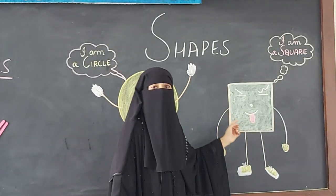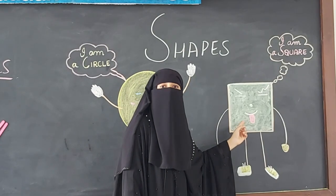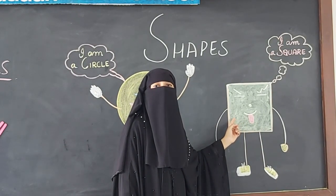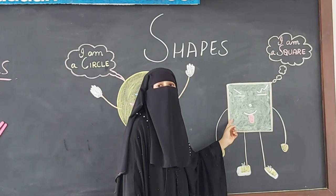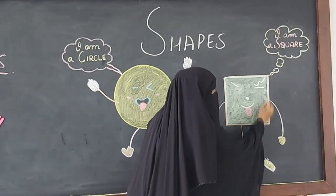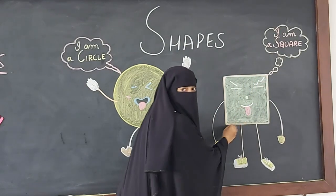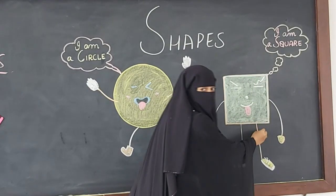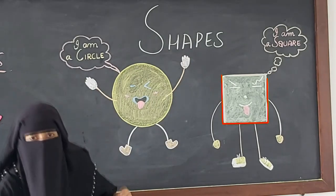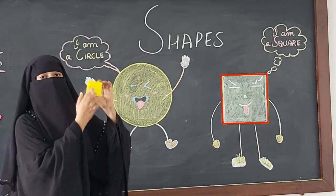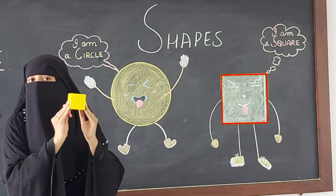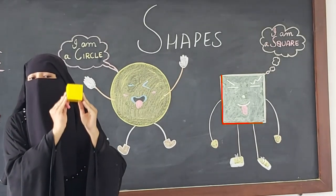Now, this is a square. Which shape is this? Square. There are 4 corners — 1, 2, 3, 4. This makes a square. See, square shape. Which shape is this? This is square.